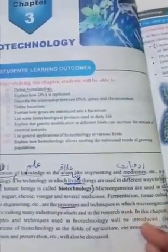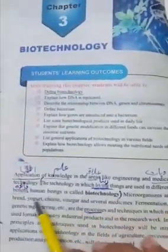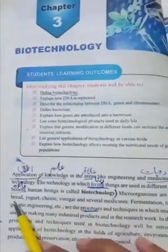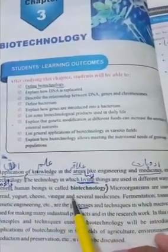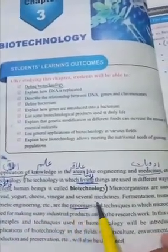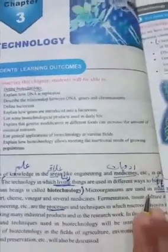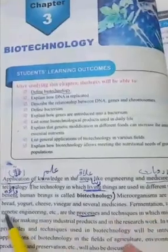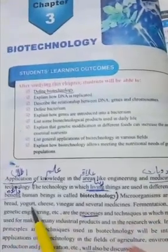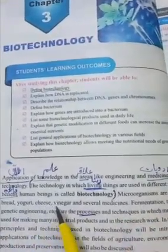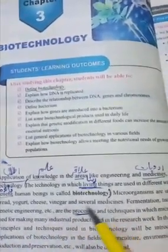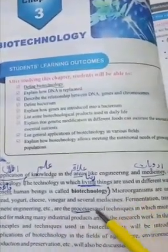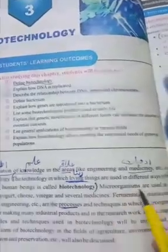Microorganisms are used in many things — bread, yogurt, cheese, vinegar and several medicines. Microorganisms ko bahut saari cheezon mein istamal kiya jata hai: bread, yogurt, cheese, vinegar, aur kuch medicines banane ke liye bhi inko use kiya jata hai.